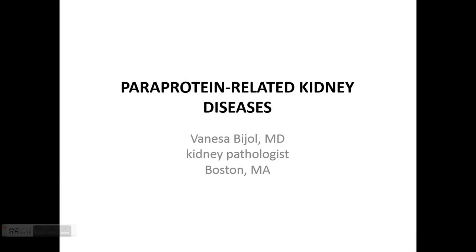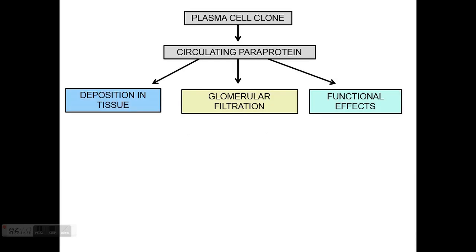In this lecture, I will talk about paraprotein-related kidney diseases. First of all, what are paraproteins? Most commonly, we think of them as abnormal immunoglobulins created by clonal proliferation of plasma cells or B cells. These circulating abnormal monoclonal proteins can have different effects on tissues.